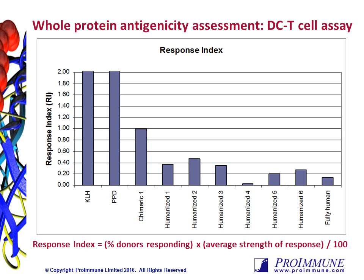This platform has a wide dynamic range in that it not only takes into account the T-cell proliferative responses to whole protein, but the antigen processing and presentation by the dendritic cells as well. In this example, the response index is shown on the Y-axis, with the X-axis representing the various test proteins. The KLH and PPD controls are featured on the left, followed by a chimeric version of the antibody, six humanized versions, and a fully human version. The response index for the humanized IV and fully human antibodies were much lower than the other variants, suggesting that comparatively, the other antibodies may be at a greater risk for causing unwanted immune responses based on the presence of more and/or stronger T-cell epitopes.